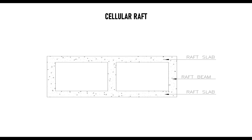The cellular raft foundation comprises two concrete slabs interlocked together using raft beams, forming a box shape — an upper slab and a lower slab connected together. This type is usually used where the ground is likely to settle significantly, and in that situation a cellular raft is highly recommended.